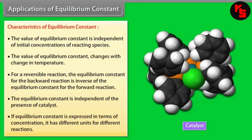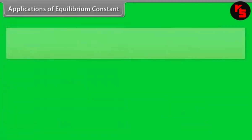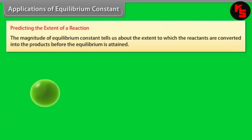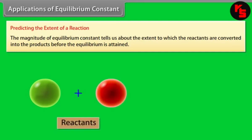Applications of Equilibrium Constant — Characteristics. The value of the equilibrium constant is independent of initial concentrations of reacting species. It changes with temperature. For a reversible reaction, the equilibrium constant for the backward reaction is the inverse of that for the forward reaction. The equilibrium constant is independent of the presence of a catalyst. If expressed in terms of concentration, it has different units for different reactions.